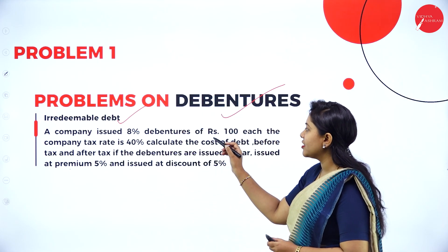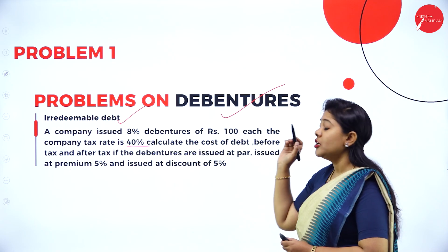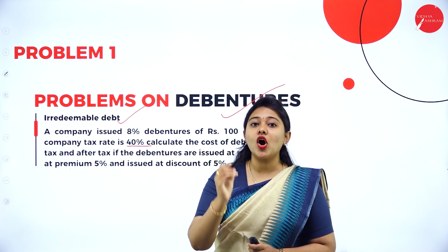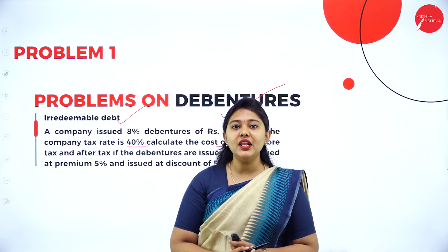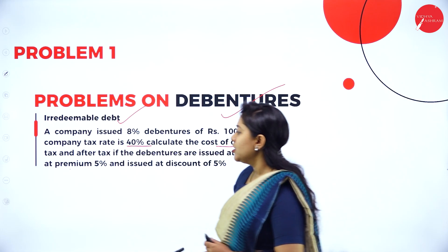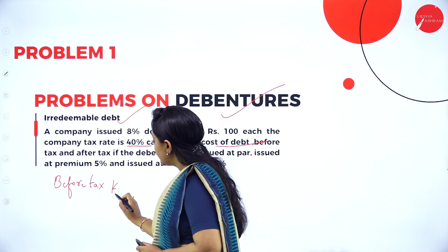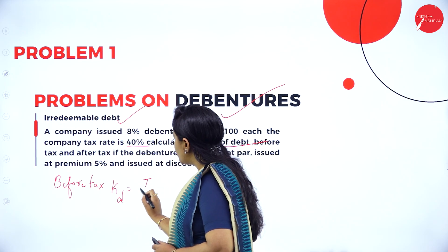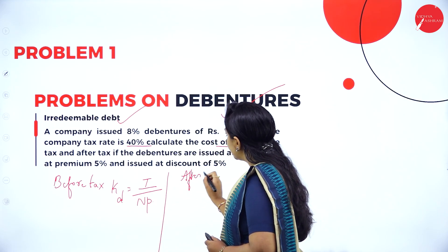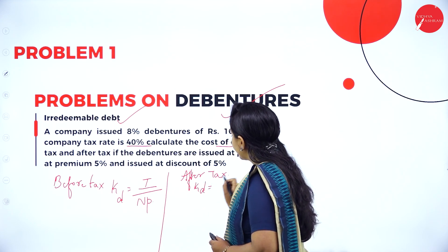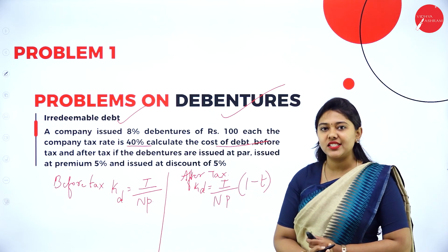A company issued 8% debentures of rupees 100 each. The company tax rate is 40%. Calculate the cost of debt. We are calculating cost of debt — irredeemable debt. So what is the formula for irredeemable debt? If it is before tax, cost of debt is equal to interest divided by net proceeds. If it is after tax, it is interest divided by net proceeds into 1 minus T, where T stands for tax rate.